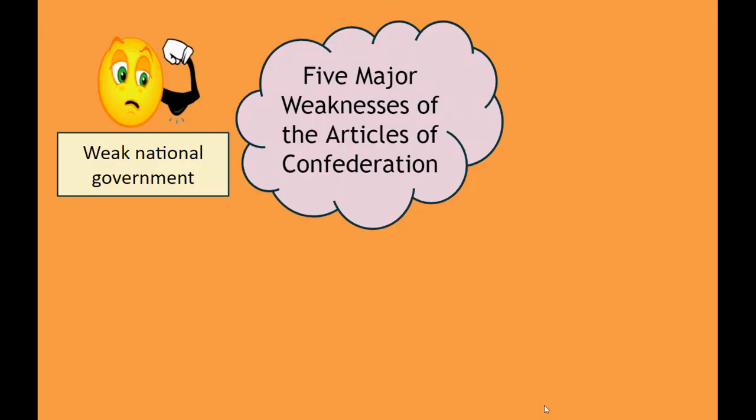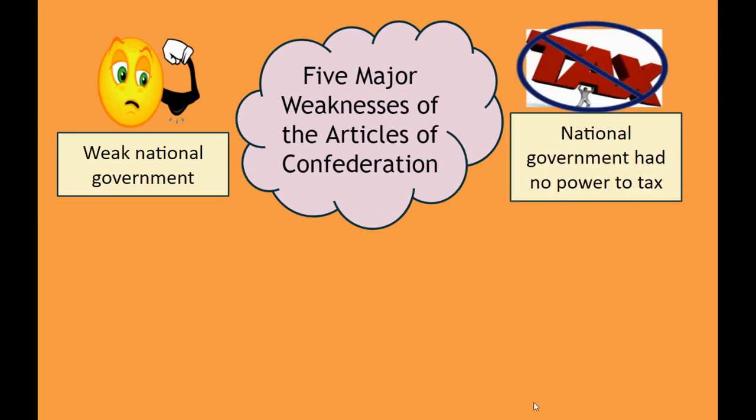There are five major weaknesses in the Articles of Confederation. We're going to briefly go over those five in this introduction video. The first one is a weak national government. The national, federal, or central government — all three words for basically the same thing — means it's the government that applies to the whole country. And in the Articles of Confederation, they made it very weak.